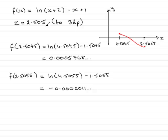So, if that's the root, it must have been 2.505 to 3 decimal places. So, just to summarize then, we can just say that therefore, since there is a change in sign, then we would have therefore x equals 2.505 to 3 decimal places. And that brings us now to the end of this question.